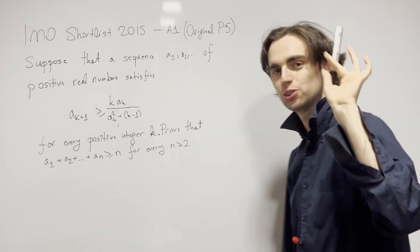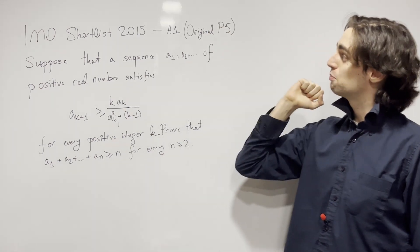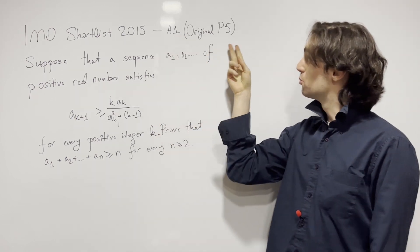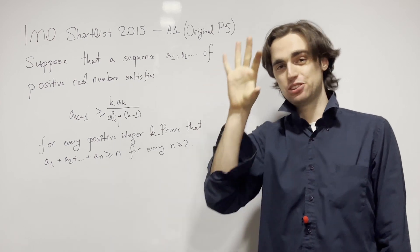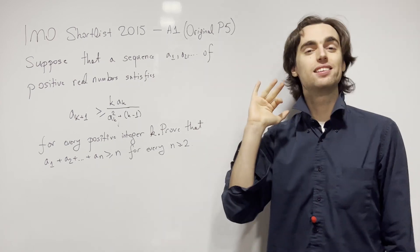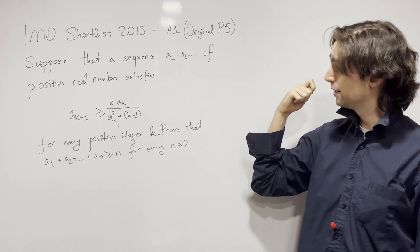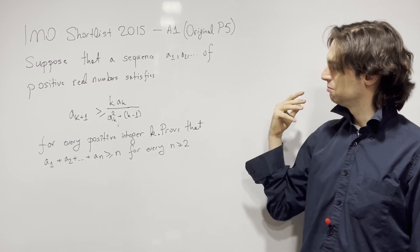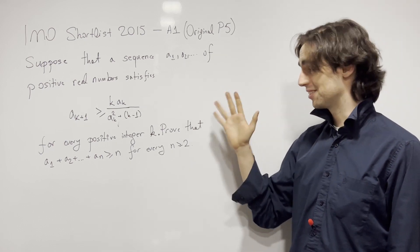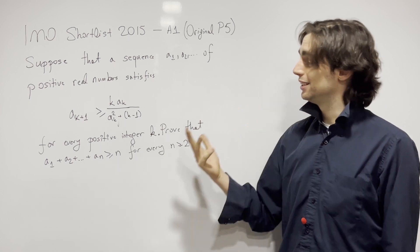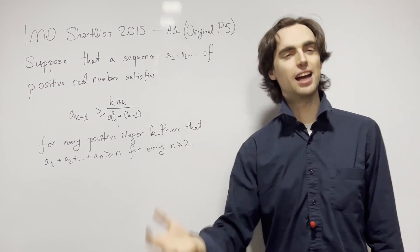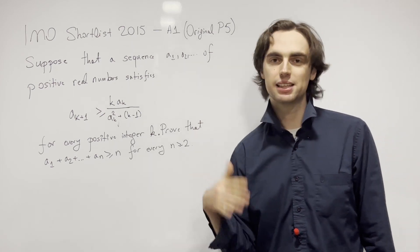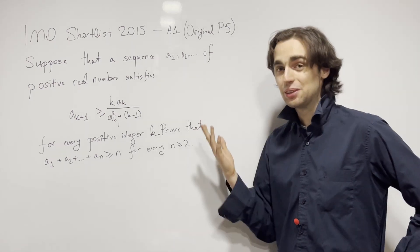Hello fellow problem solvers! We're going to be doing a problem from the 2015 IMO shortlist, problem number A1 — this is actually the original problem number five. There's a story behind this problem that I'll mention at the end of this video. If you want to try this problem, I invite you to try it for a minimum of 20 to 30 minutes, ideally 90 minutes to two and a half hours, not more than four and a half hours. Now without further ado, let's begin.